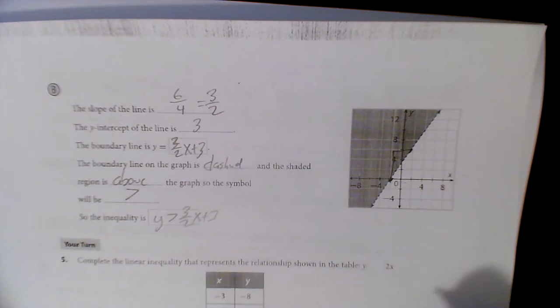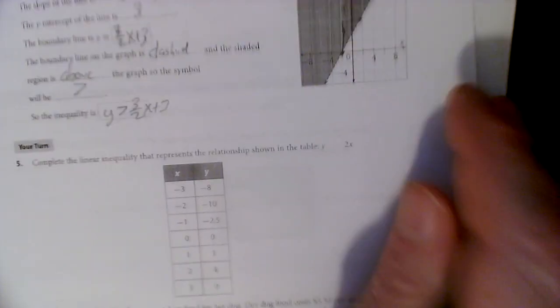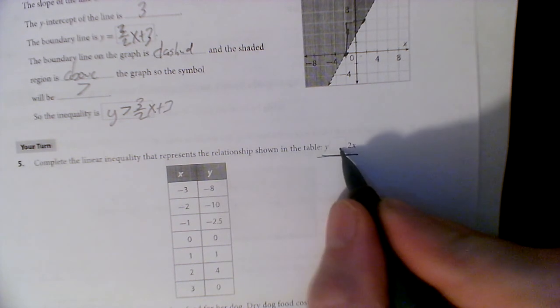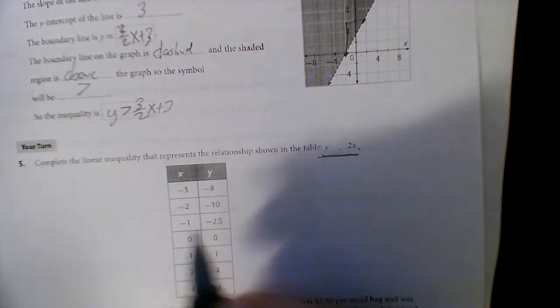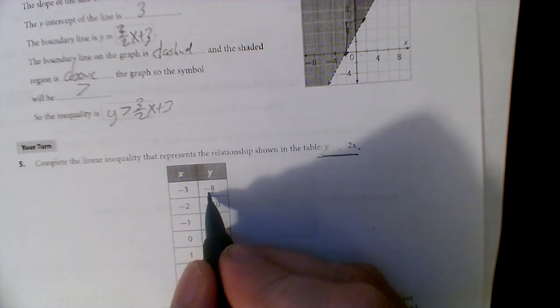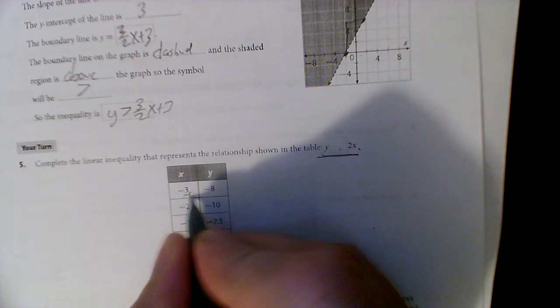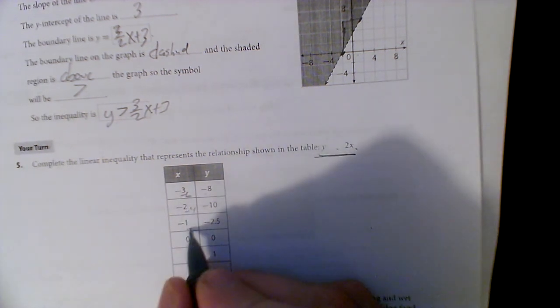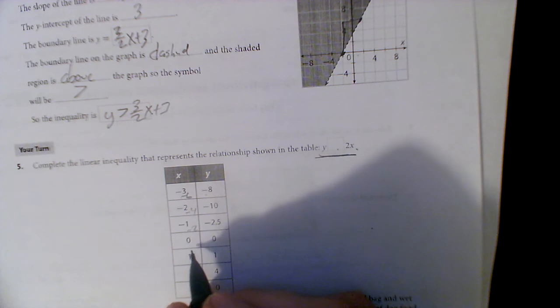Well that's kind of easy. Let's see if we can figure this guy out. This one's a little bit weirder. They're saying, what sign are we gonna put in the middle of y and 2x? So this gives me negative six. If I double this, that's negative six. If I double this, that's negative four. If I double that, that's negative two.